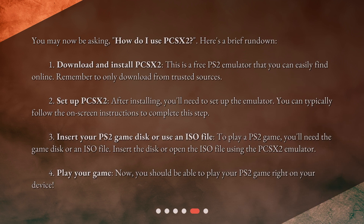You may now be asking: how do I use PCSX2? Here's a brief rundown. Step one: download and install PCSX2. This is a free PS2 emulator that you can easily find online — remember to only download from trusted sources. Step two: set up PCSX2. After installing, you'll need to set up the emulator; you can typically follow the on-screen instructions to complete this step.